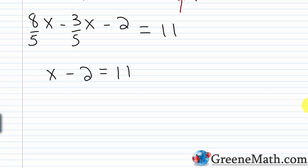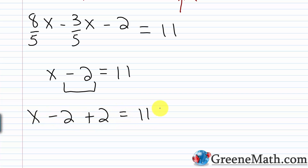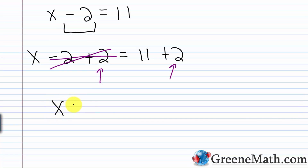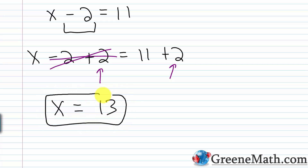Now I have x minus 2 equals 11. What's being done to x? I'm subtracting away 2. So to get x by itself, I add 2 to both sides: x minus 2 plus 2 equals 11 plus 2. Minus 2 plus 2 is 0, so I just have x on the left. And 11 plus 2 is 13. So x equals 13.